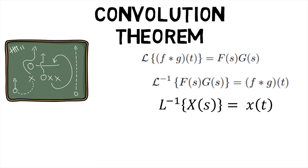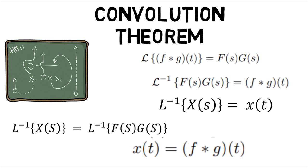Suppose you want to find the inverse transform x of t from capital X of s. If you can write capital X of s as a product of capital F of s into capital G of s where f of t and g of t are known, then the above result x of t equals f into g of t.